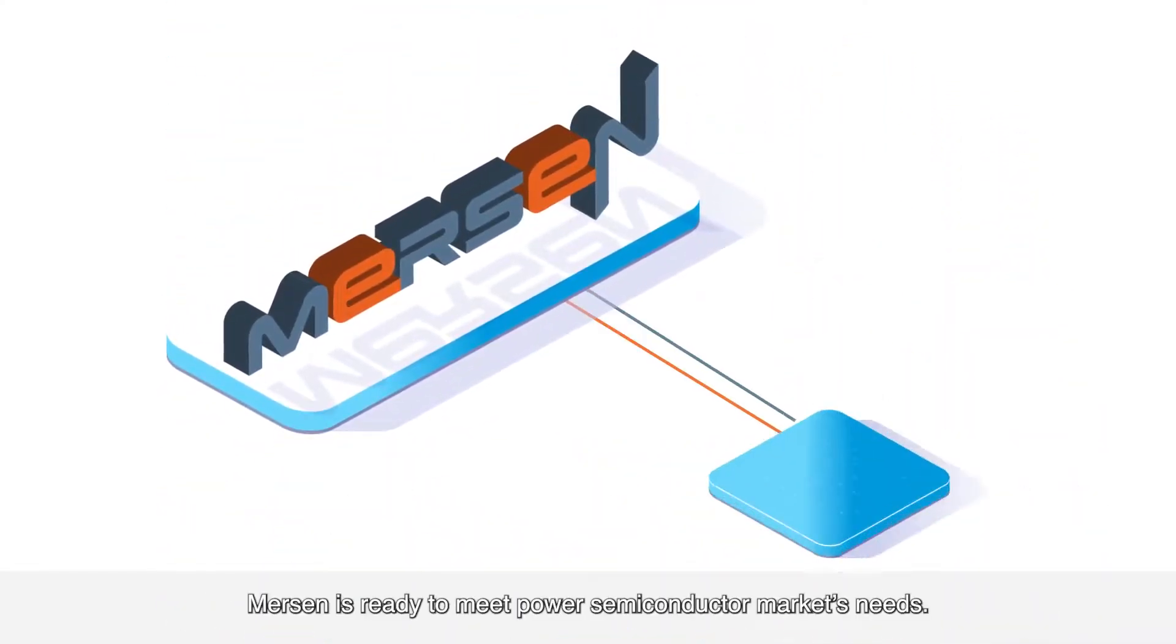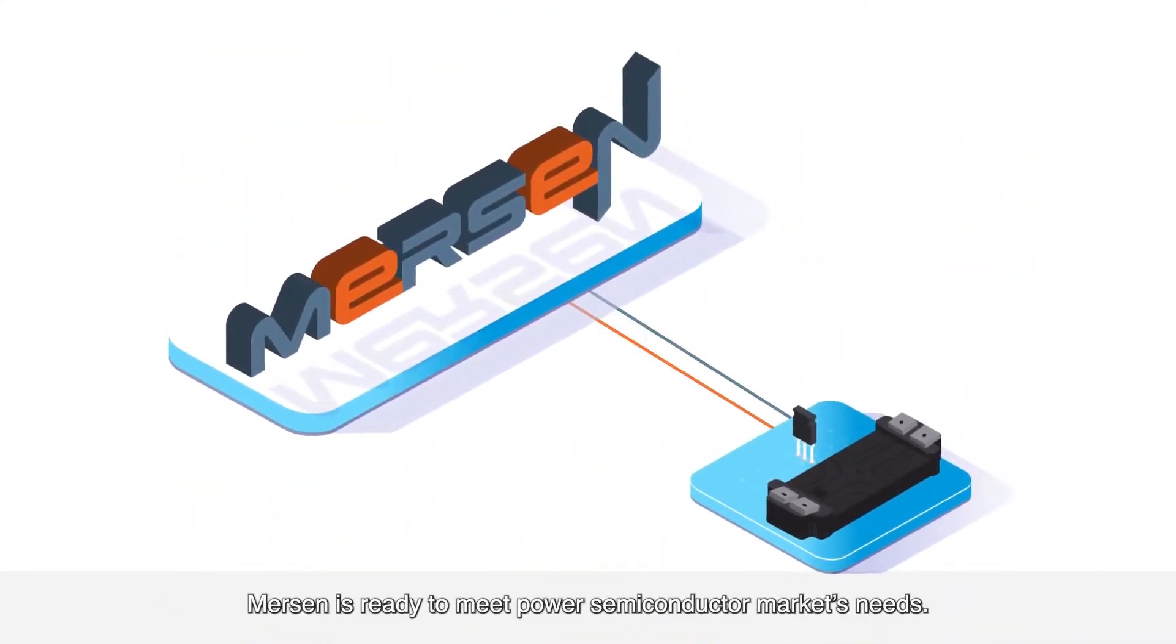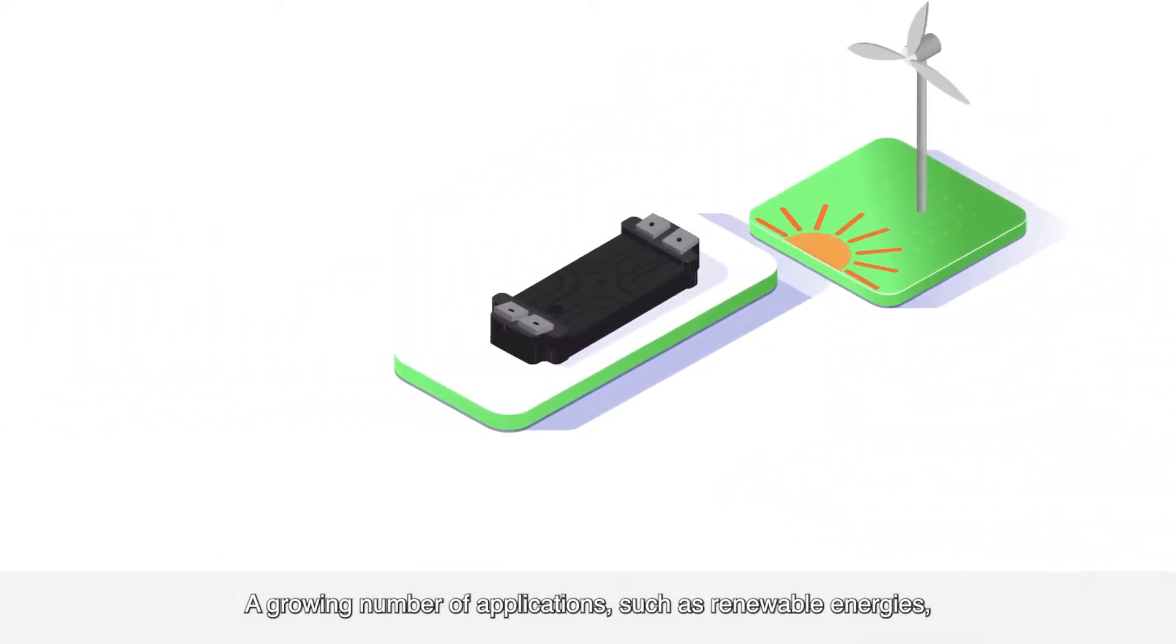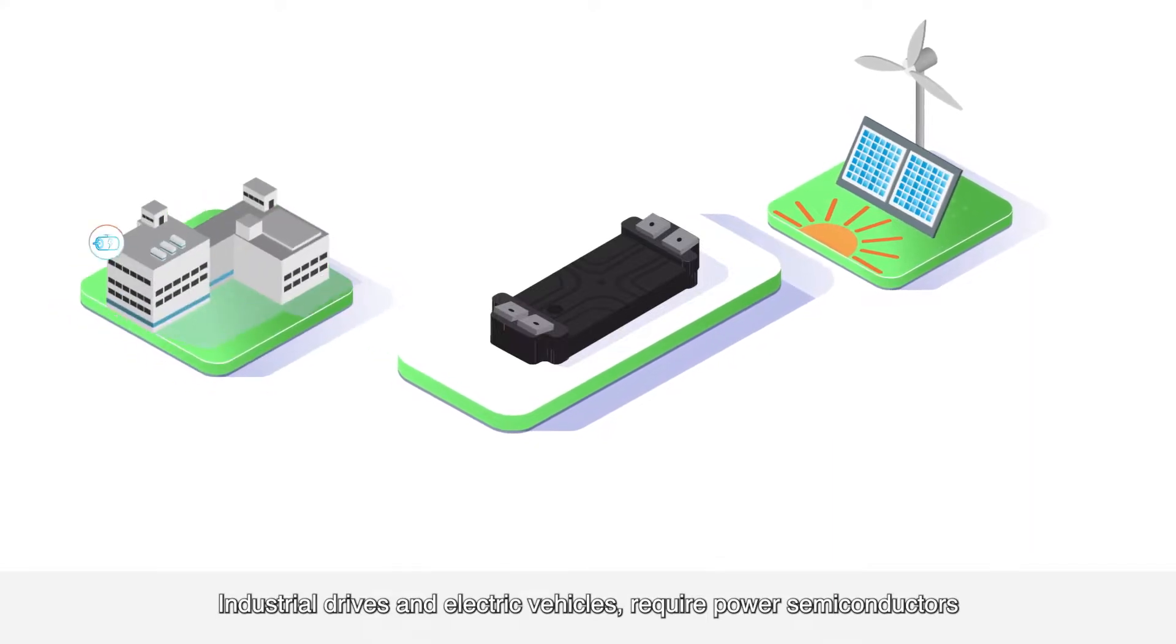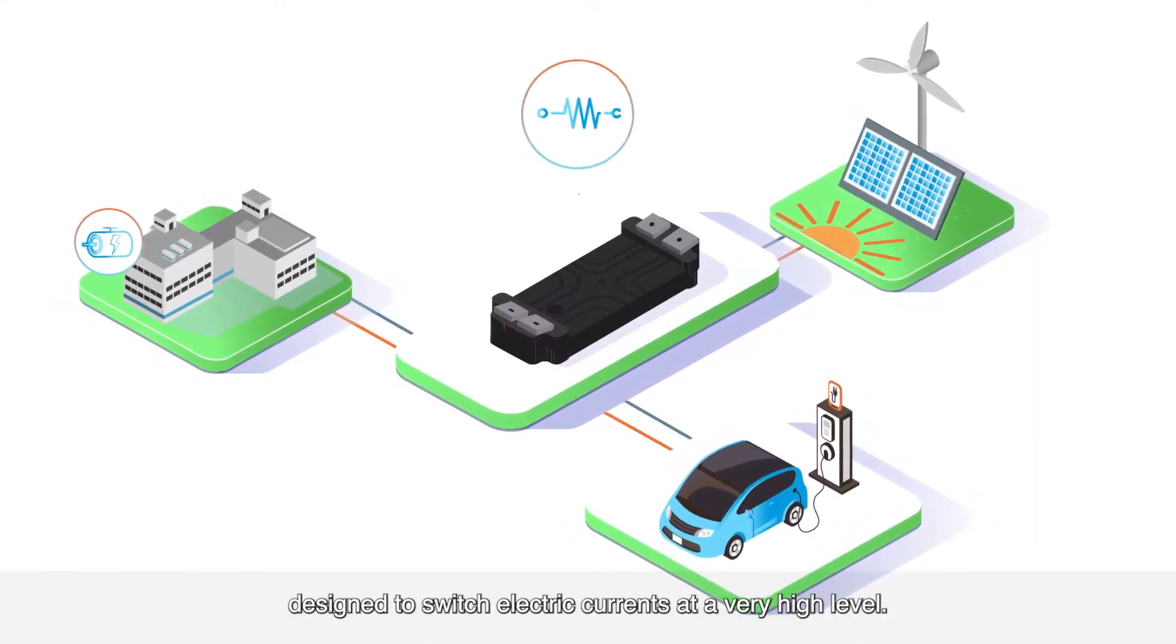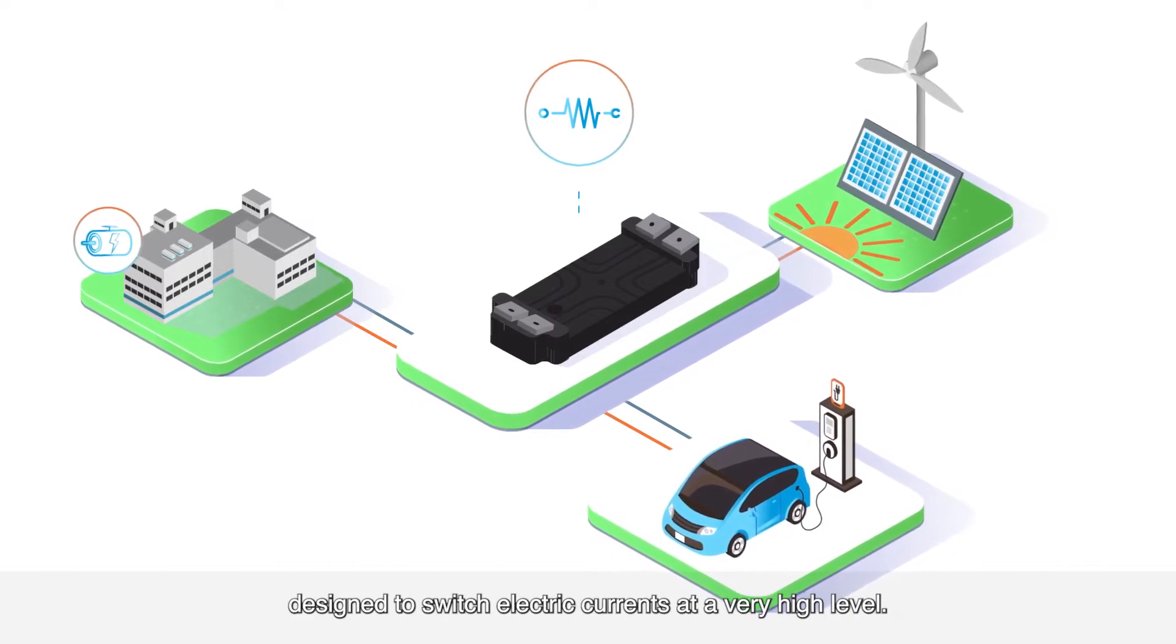Mersin is ready to meet power semiconductor market's needs. A growing number of applications such as renewable energies, industrial drives, and electric vehicles require power semiconductors designed to switch electric currents at a very high level.